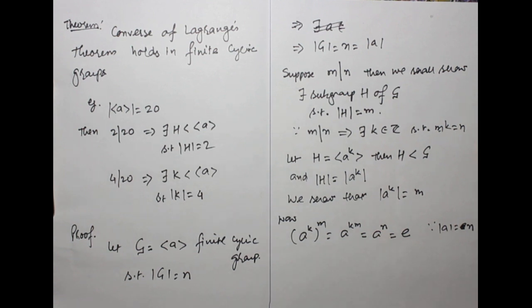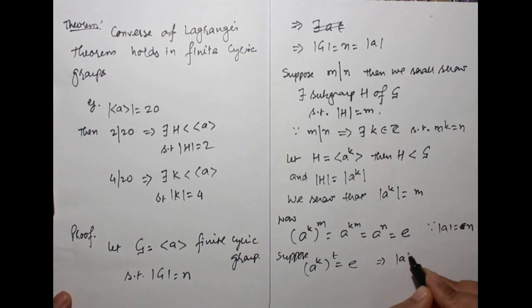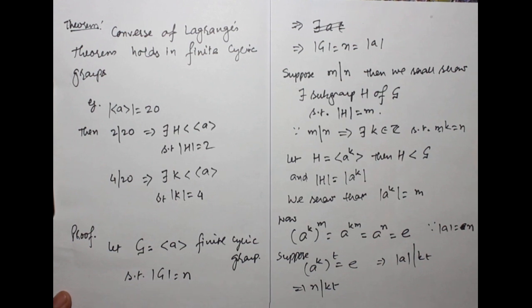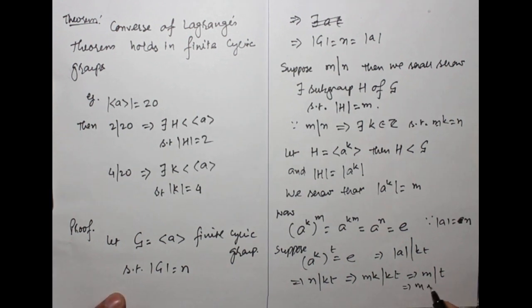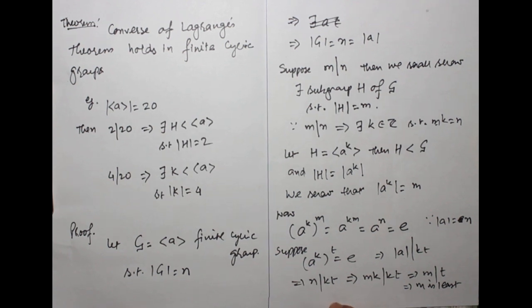Now we show this m is the least positive integer. Suppose (a to the power k) to the power t equals to also e. It implies order of a must divide kt. It implies n divides kt. It implies mk divides kt. It implies m divides t. It means m is least. Therefore order of a to the power k equals to m, which is order of H. The theorem is proved.